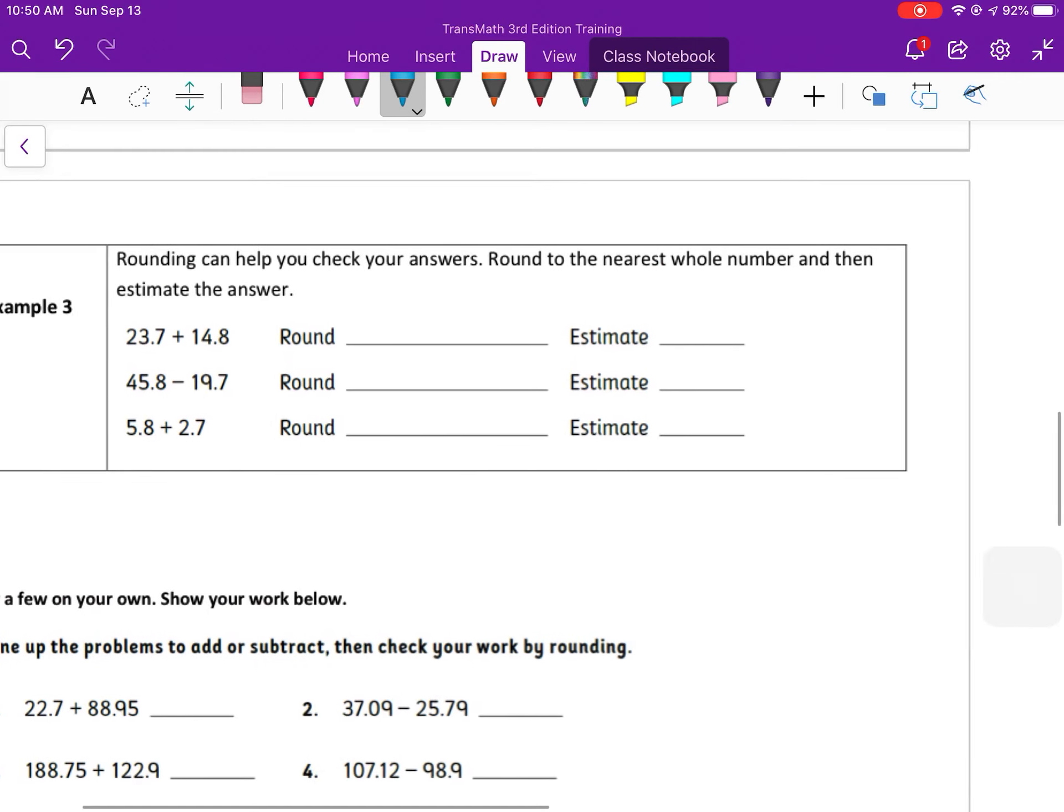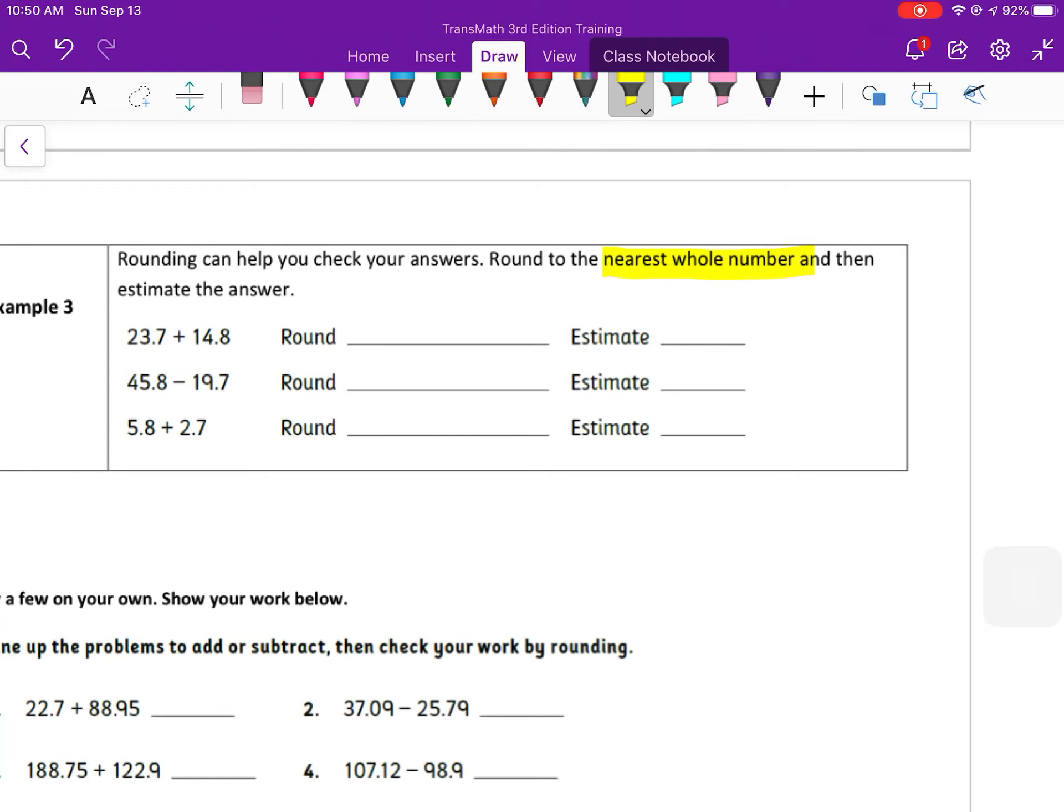Rounding can help us check our answers. If we round this to the nearest whole number, so that's a number without a decimal, then we can estimate our answer. So I'm going to round these by looking at the number that's behind the decimal point. If it's a 5 or more, we're going to round up. So for 23.7, since 0.7 is bigger than 0.5, we're going to round that up to 24. Plus, similarly with 14.8, 8 is bigger than 5, so we're going to round 14 up to 15. And then we can add these. And if I add 24 plus 15, that equals 9 and 3, 39. So my estimation for adding those two decimal numbers would be, my answer would be really close to 39.